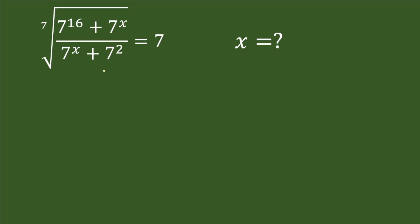Hello friends, welcome back to this session. Today we will solve this exponential problem: square root of 7, times (7 power 16 plus 7 power x) divided by (7 power x plus 7 squared), and that is equal to 7. We will find the value of x.